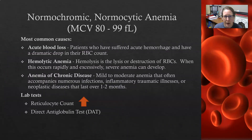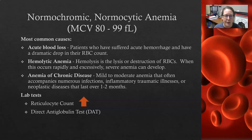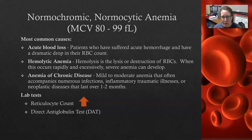There is also normochromic, normocytic anemia, where the MCV is normal. The most common causes, where there are really no changes in the red cell indices, are acute blood loss — such as a patient who suffers an acute hemorrhage and a dramatic drop in red cell count, for example from a stab wound to the femoral artery — and hemolytic anemias, where there is hemolysis.